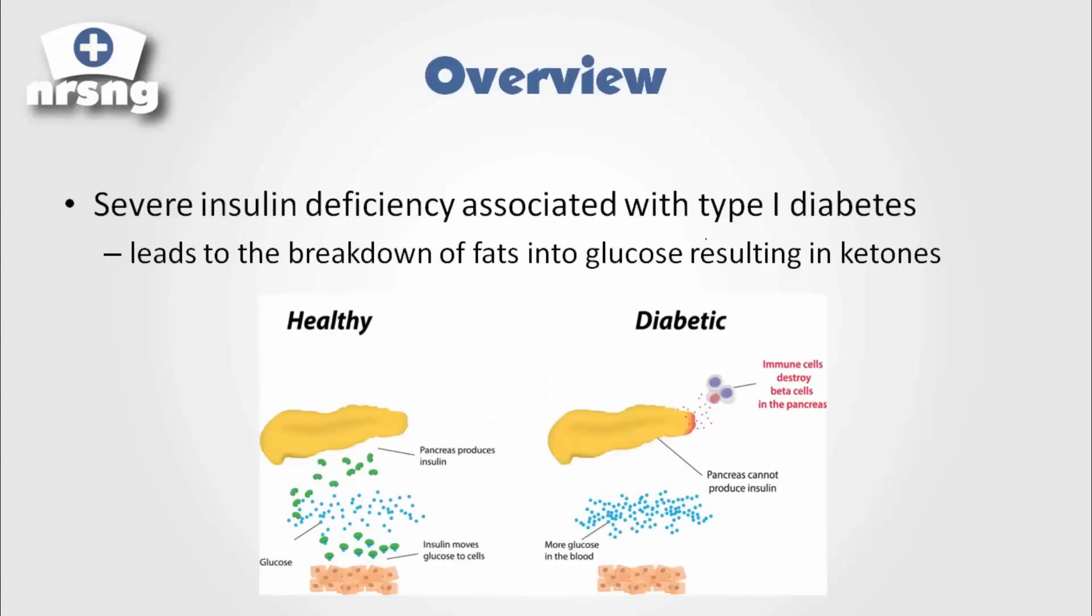First of all, this is going to occur with type 1 diabetic patients. With type 1, it's an autoimmune disorder where our immune system destroys these beta cells that produce insulin. So we have extreme insulin deficiency or no insulin at all. What happens is this ends up leading to the breakdown of fats into glucose which results in ketone bodies which are acidic. We have severe insulin deficiency or no insulin at all which leads to the breakdown of fats into glucose for energy and that results in acidic ketones in the body.